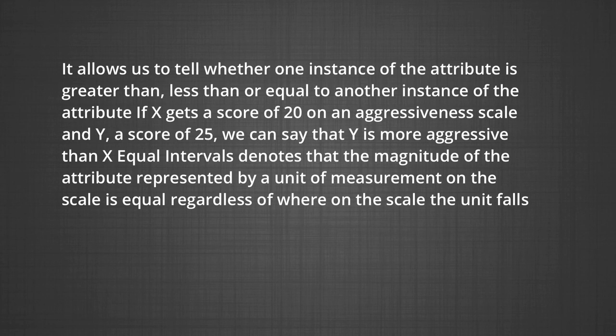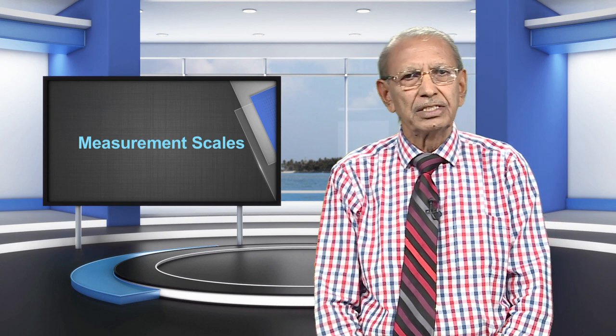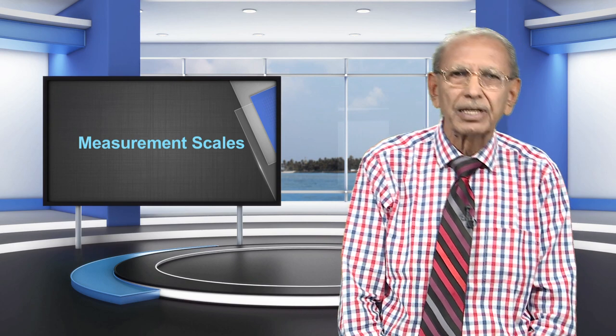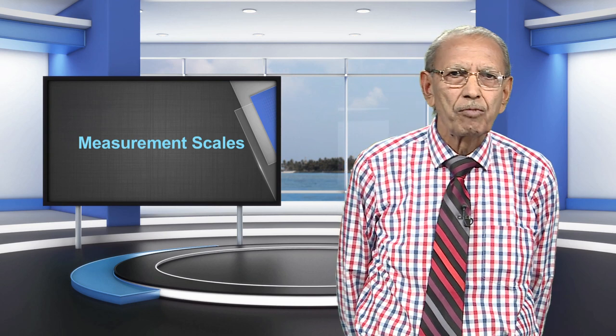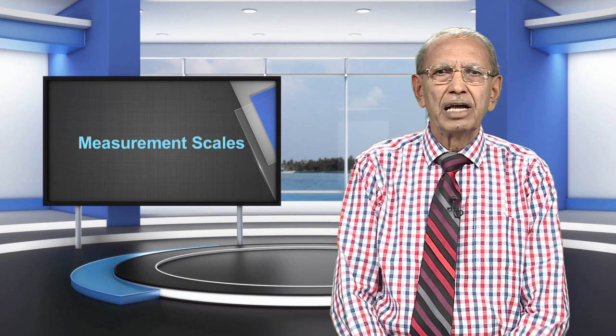Equal intervals denote that the magnitude of the attribute represented by a unit of measurement on the scale is equal regardless of where on the scale the unit falls. For example, a difference in heights between 60 inches and 65 inches is equal to the difference in height between 67 inches and 72 inches. However, when working with psychological phenomena, it may not be possible to interpret the equality of units at different points of the scale. For example, a difference in IQ between 170 and 190 may not be considered equal to the difference between IQ scores of 100 and 120.